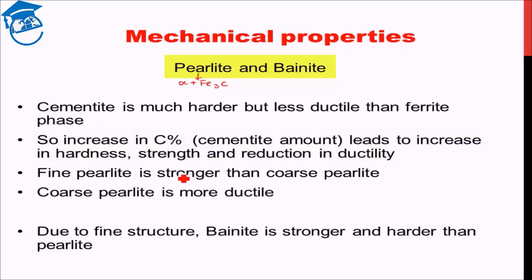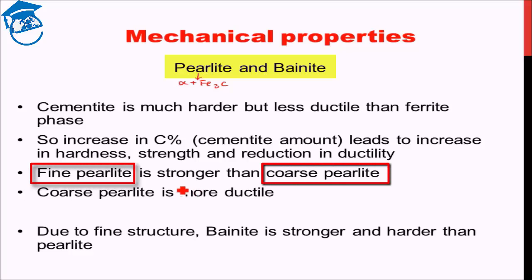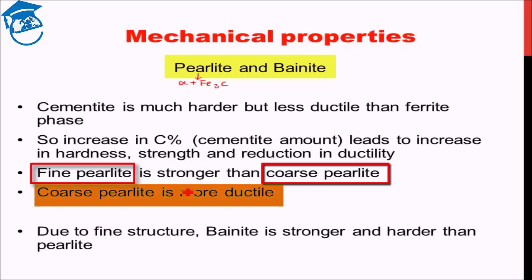We also saw that there are two types of pearlite possible: fine pearlite and coarse pearlite. Fine pearlite, which was formed at lower temperature, is much stronger than coarse pearlite, whereas coarse pearlite is a little bit more ductile than fine pearlite. These are the basic properties of pearlite.